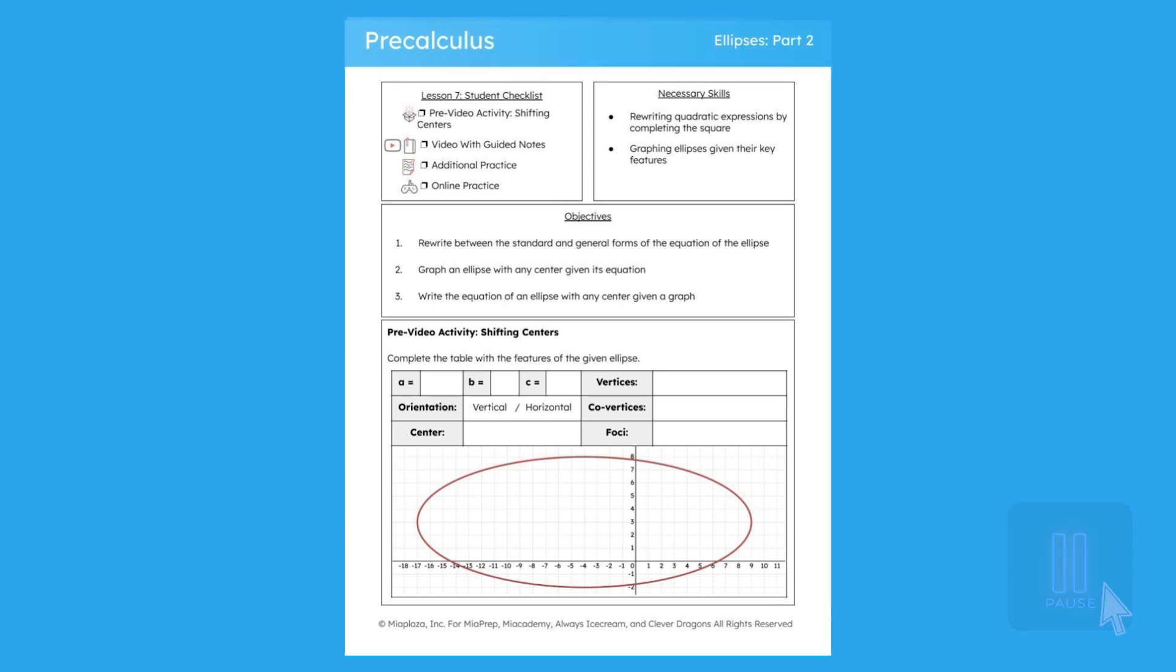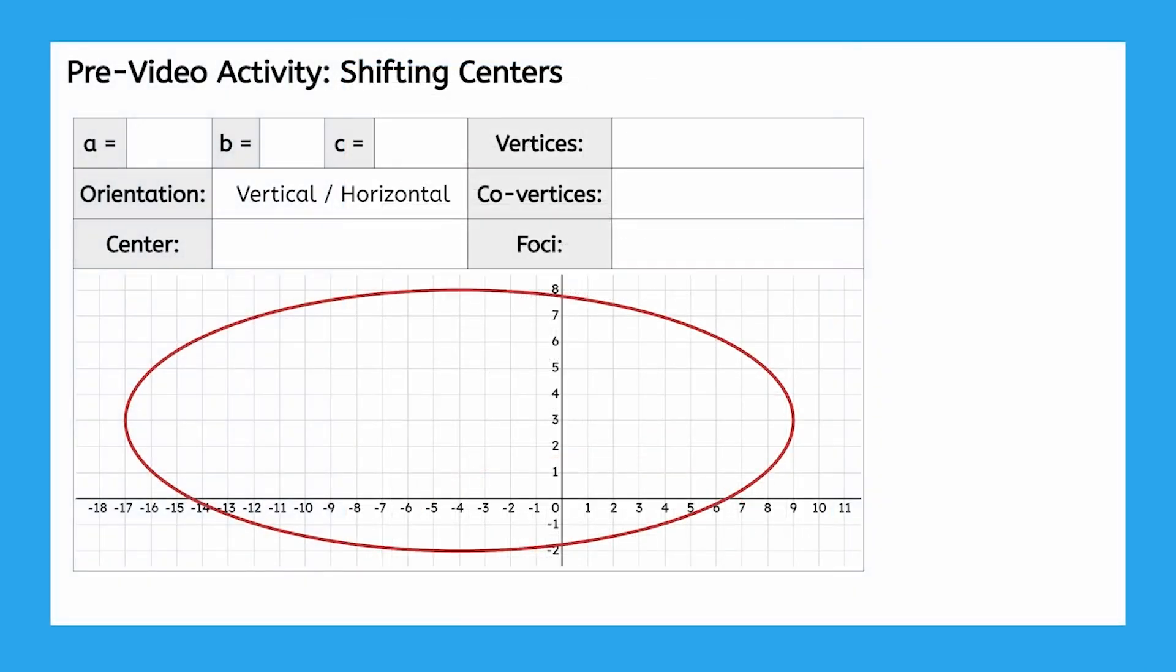Let's check your work! From the graph, we can quickly see this ellipse has a horizontal major axis, vertices at negative 17, 3 and 9, 3, and co-vertices at negative 4, 8 and negative 4, negative 2. What about its center?